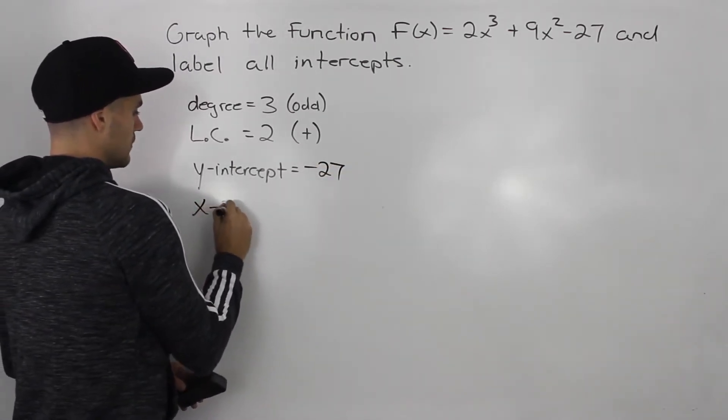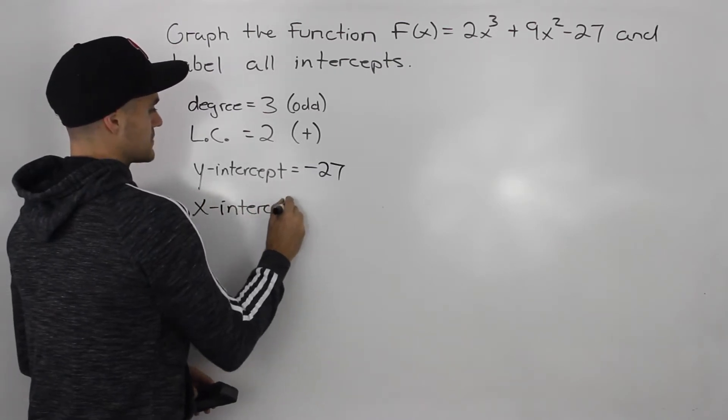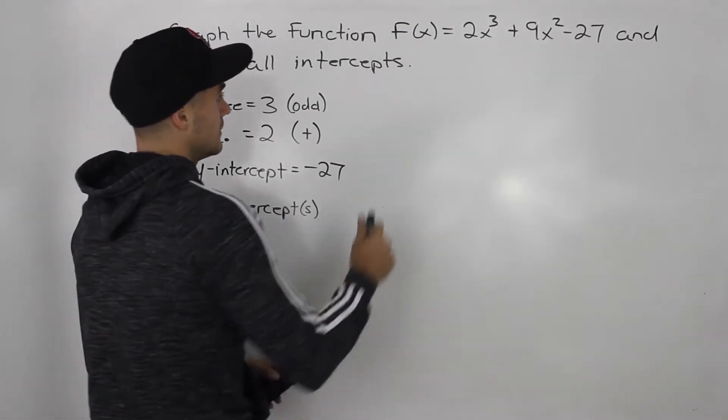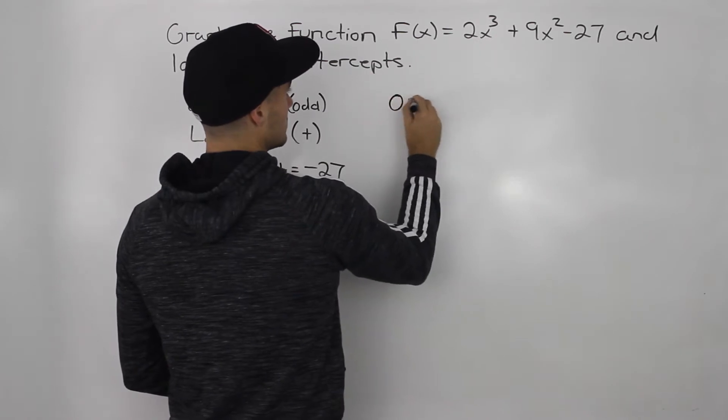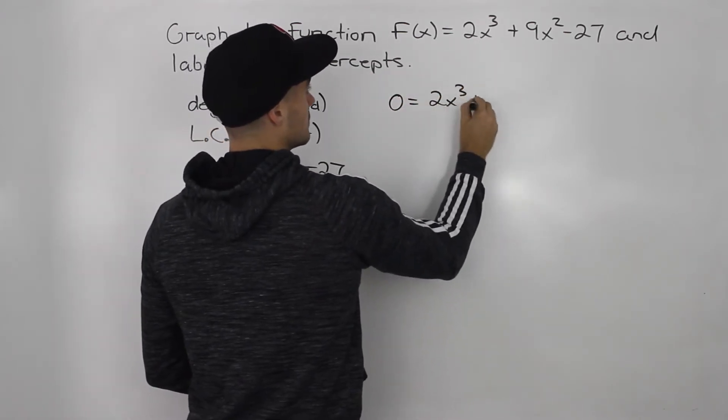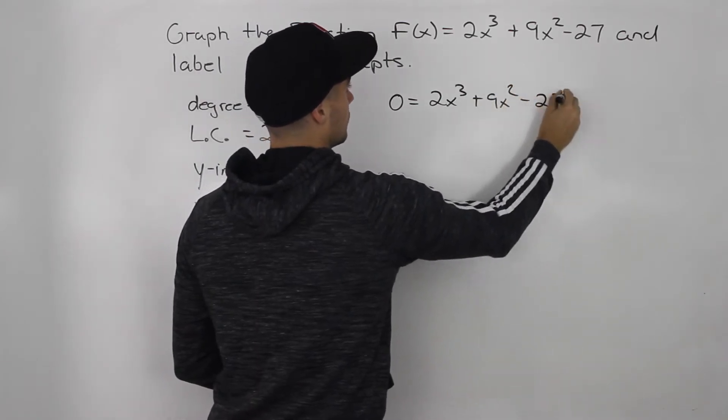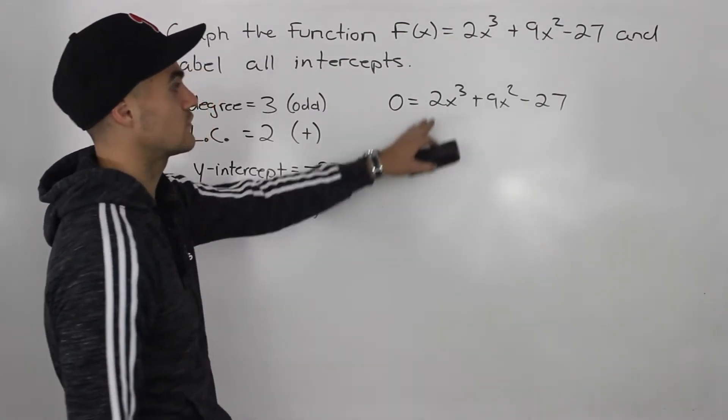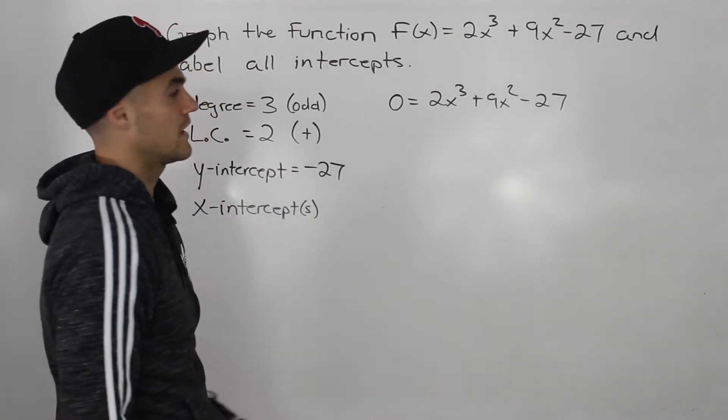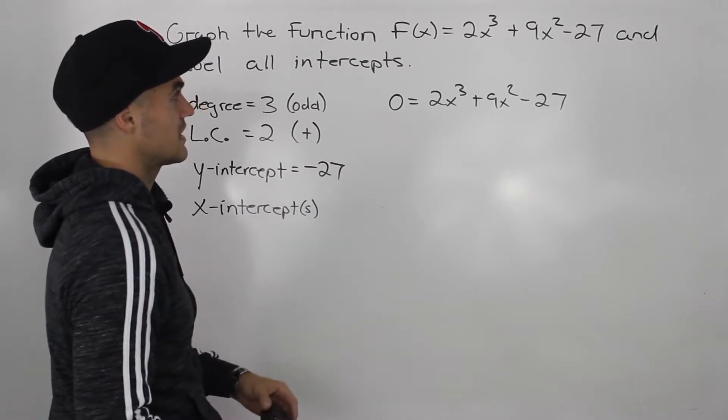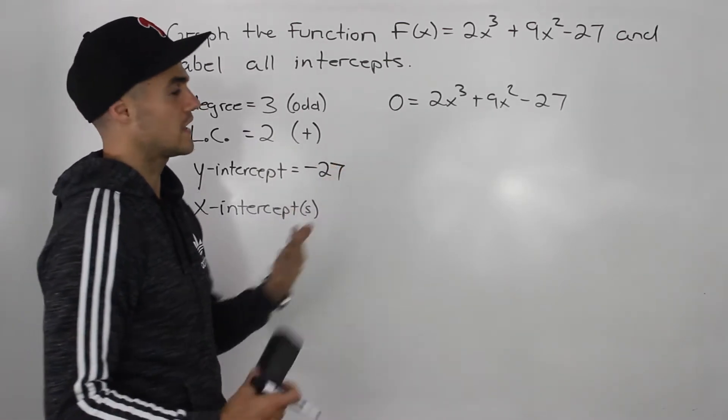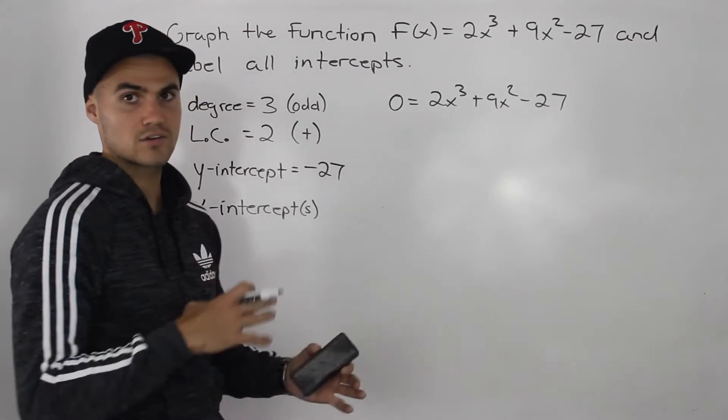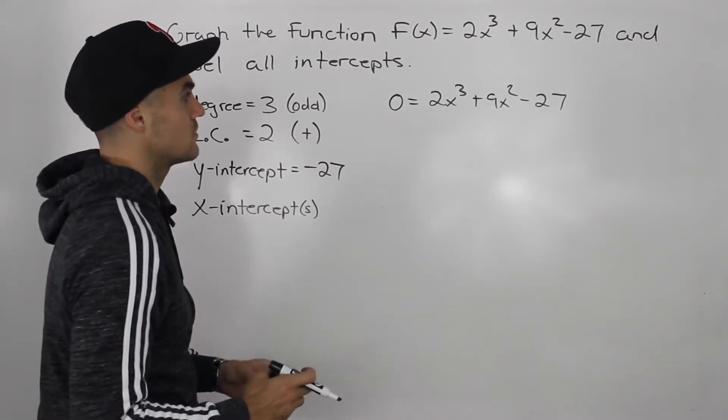Now the tricky part, finding the x-intercept or x-intercepts, if there even are any. So the way we do that is we have to solve when does this function equal 0. For what x values is the y value going to be 0? So we have to factor this, and we have to use factor theorem, because if it's a degree that is greater than 2, we can't just use the quadratic formula. We have to use factor theorem, do long division, until we get to a quadratic.